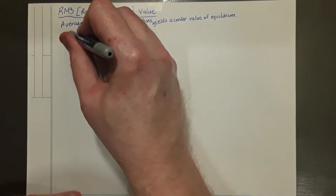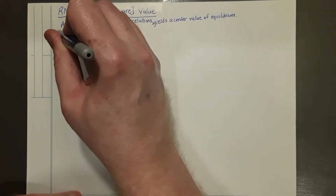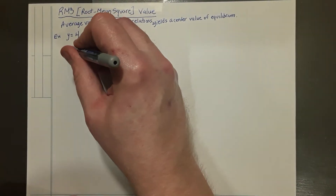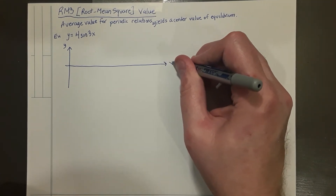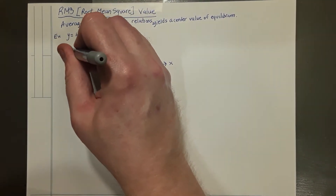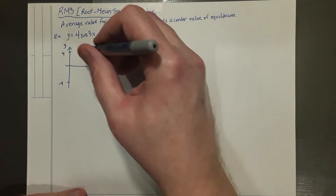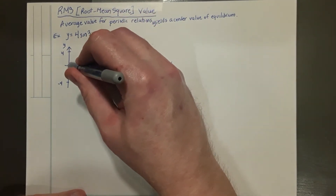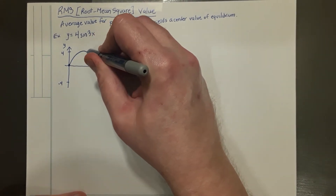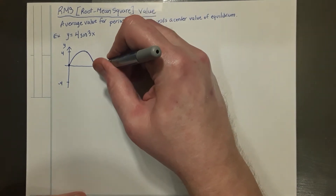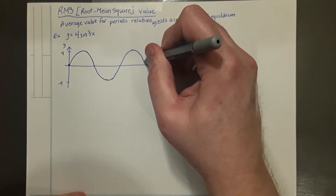For example, if you take a regular sinusoidal variation like y equals 4 sine 3x, and you make a graph of y versus x, the amplitude of this sinusoidal variation is 4, so it will vary between a maximum of plus 4 and a minimum of minus 4. It's a sinusoidal variation — a sine function with no phase shift — so it will start at 0, head up to a maximum value of 4, go back down to a minimum value of minus 4, and so on.